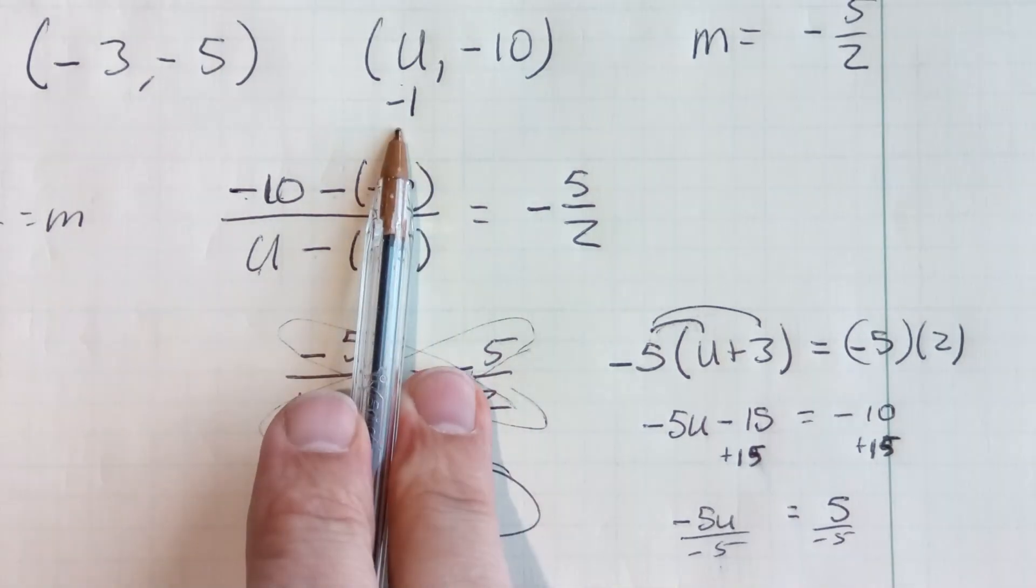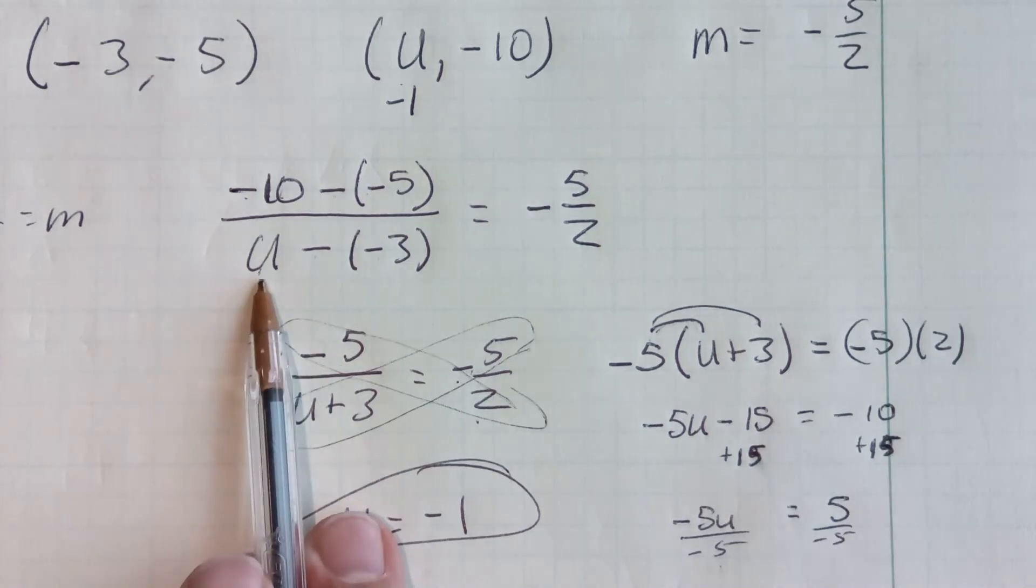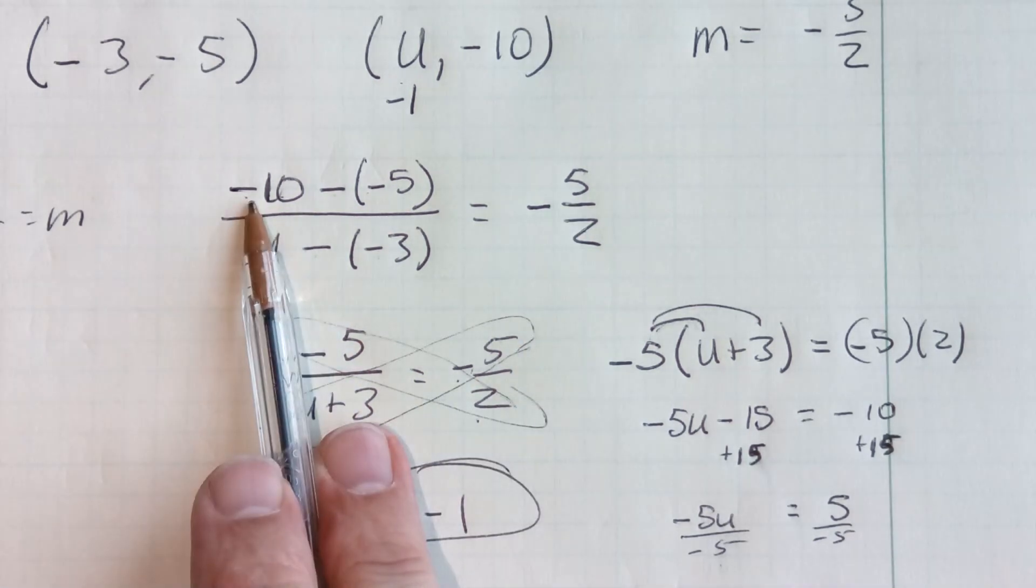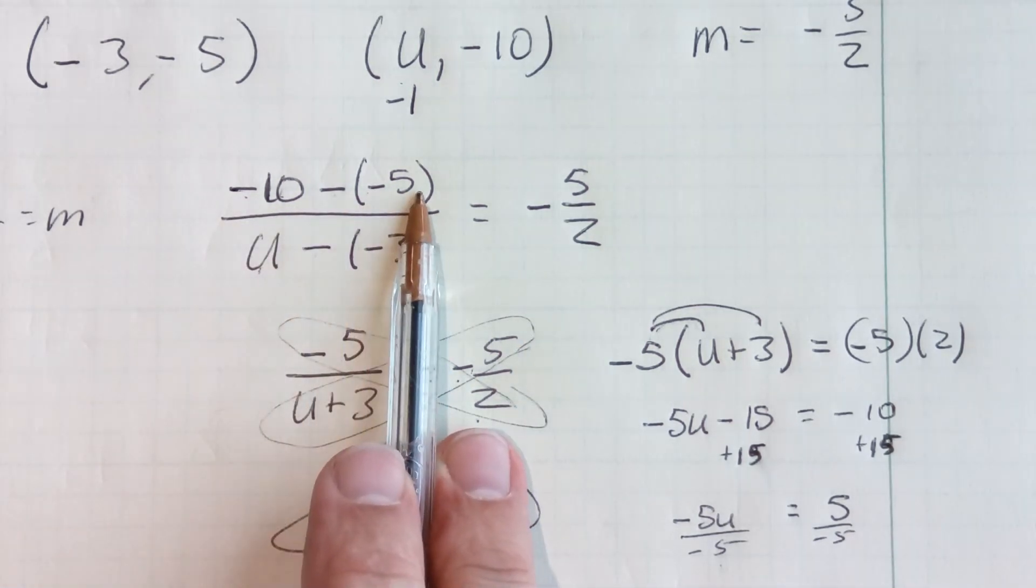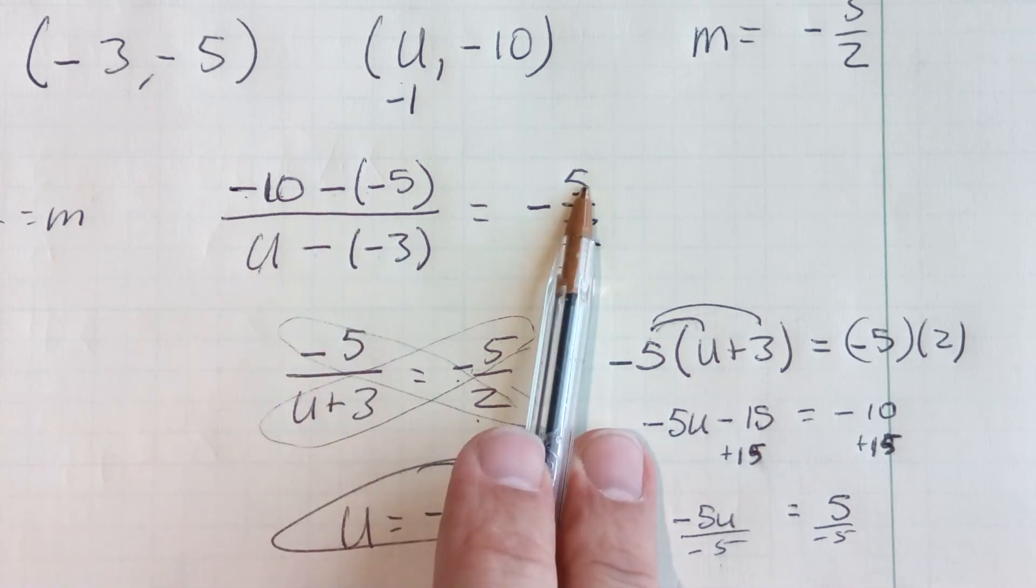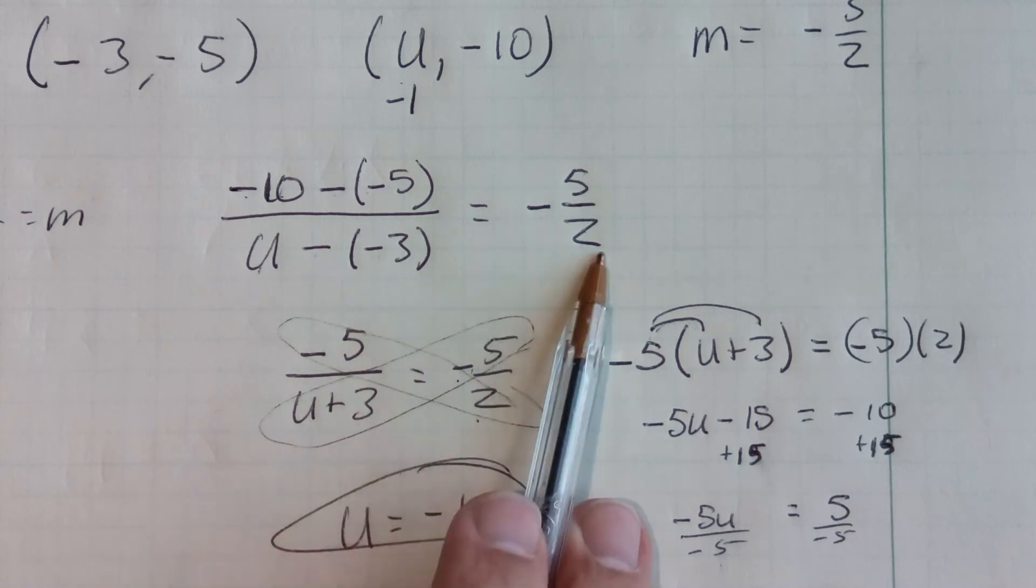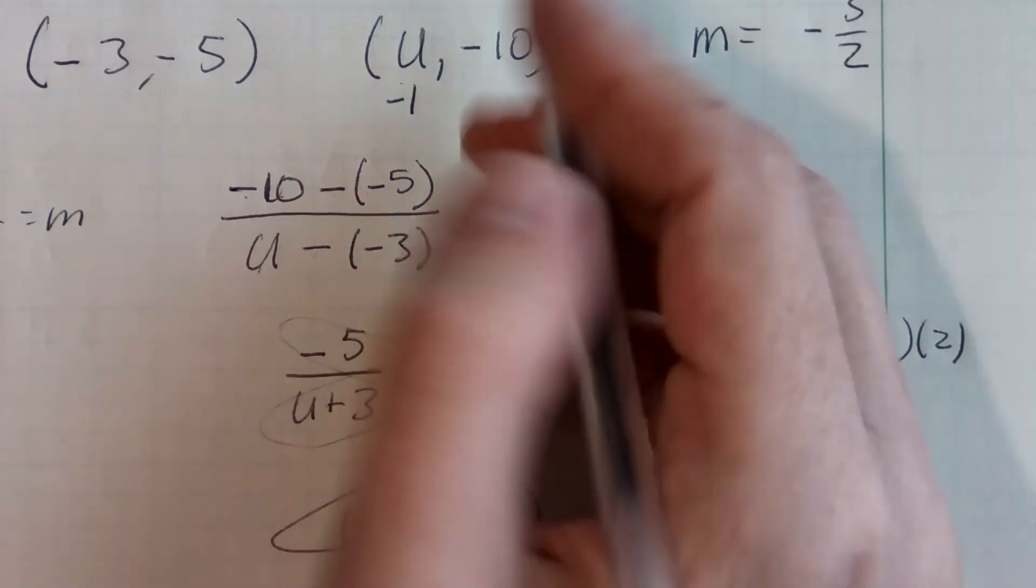So I come back up here and say my u value is negative 1. Now, again, I could easily check that by plugging it back into here and plug a negative 1. So that would give us 2. It works. So my u value is negative 1.